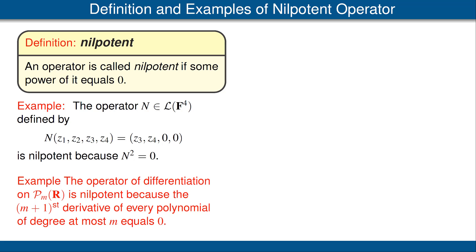If you do that n plus 1 times, you get zero because we're only working with polynomials of degree less than or equal to m. In other words, this operator raised to the n plus first power is equal to zero. Thus, it is a nilpotent operator.